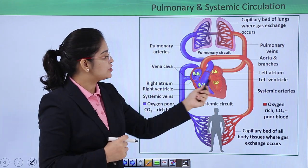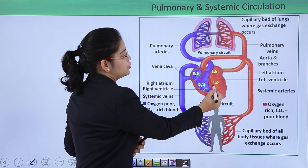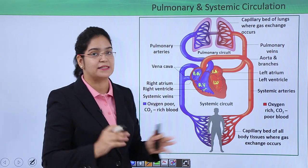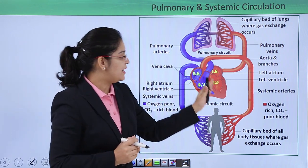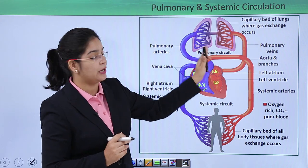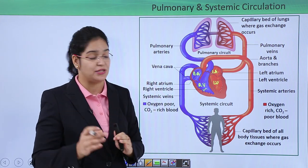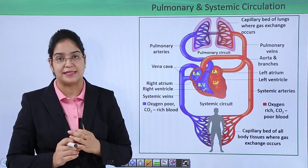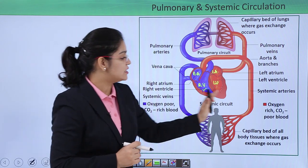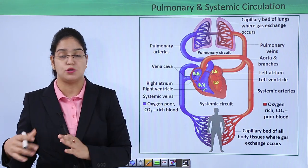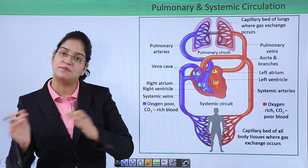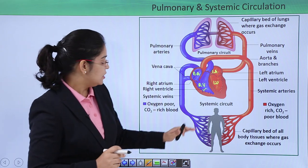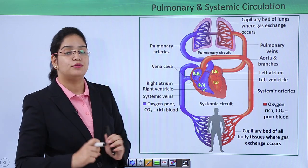After oxygenation, blood flows from the left atrium to the left ventricle. From the left ventricle, systemic circulation starts — the oxygenated blood goes to the aorta and from the aorta to its branches to the capillary bed. Here the exchange of gases occurs: oxygen from the oxygenated blood goes to the tissues or cells, and carbon dioxide comes back into the blood, making it deoxygenated blood.